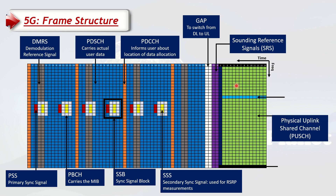Then we have the PUSCH — Physical Uplink Shared Channel. All of the green area is the PUSCH, which carries the uplink traffic. Like the PDSCH in the downlink (blue area), the more PUSCH we have the more uplink capacity we get. Similarly, there is the RACH channel — the blue line — which is used by the UE to send the uplink RACH preamble for uplink synchronization. So while PSS and SSS are used for downlink synchronization, RACH is used for uplink synchronization.